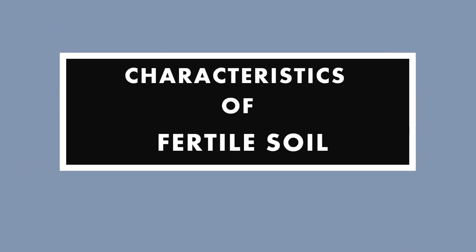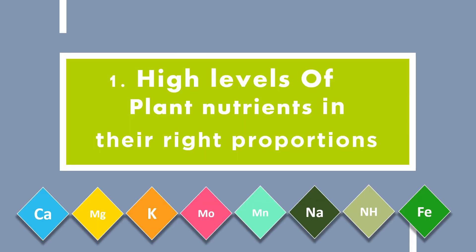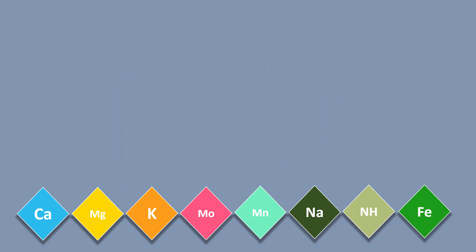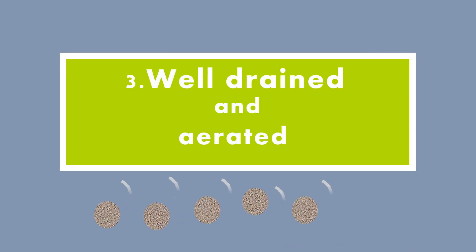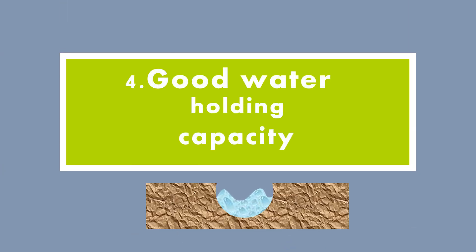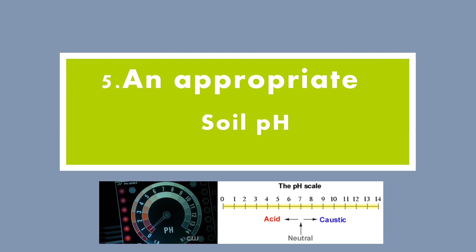Characteristics of fertile soil: one, high levels of plant nutrients in the right proportions — the nutrients should be in a form that is available to the plants. Two, the soil should be well drained and aerated; aeration promotes healthy root development. Three, a fertile soil should have a good water holding capacity.